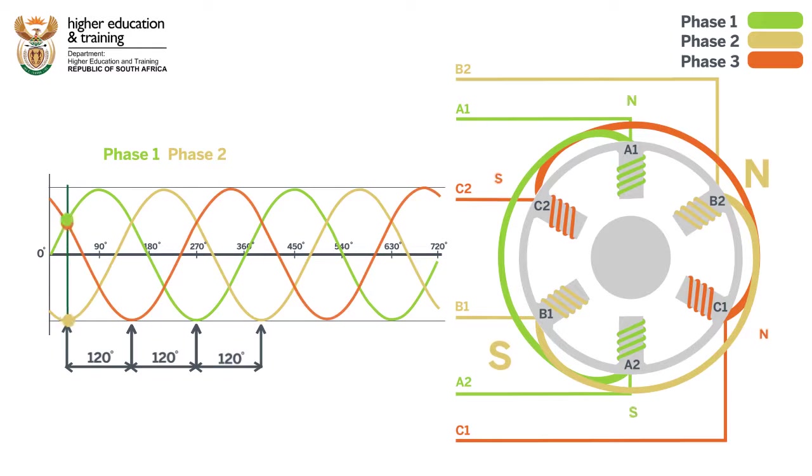If we add the third phase, we again see magnetic poles forming. Because of the 120 degree phase shift between phase 3 and phase 2, these poles form just after those that form on B1 and B2.